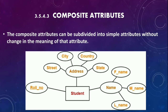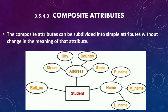The third type is composite attribute. A composite attribute is one that can be subdivided into simple attributes. For example, the entity Student has attributes Role Number, Address, and Name. Address is further divided into Street, City, Country, and State — so Address is a composite attribute. Similarly, Name is divided into First Name, Middle Name, and Last Name — so Name is also a composite attribute. This entity has two composite attributes.